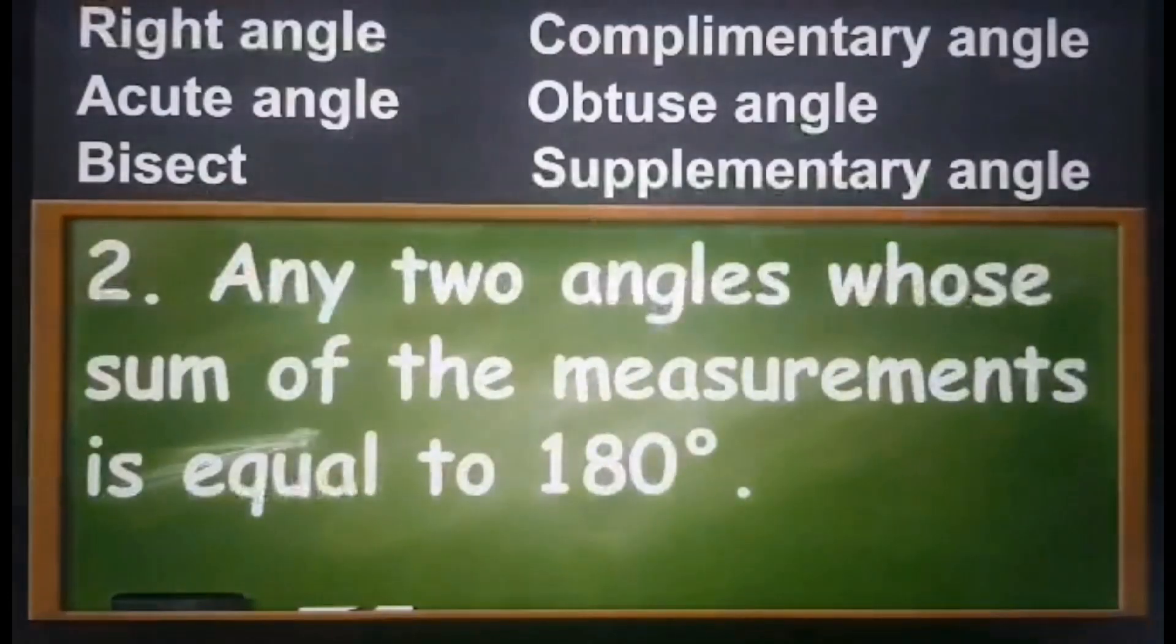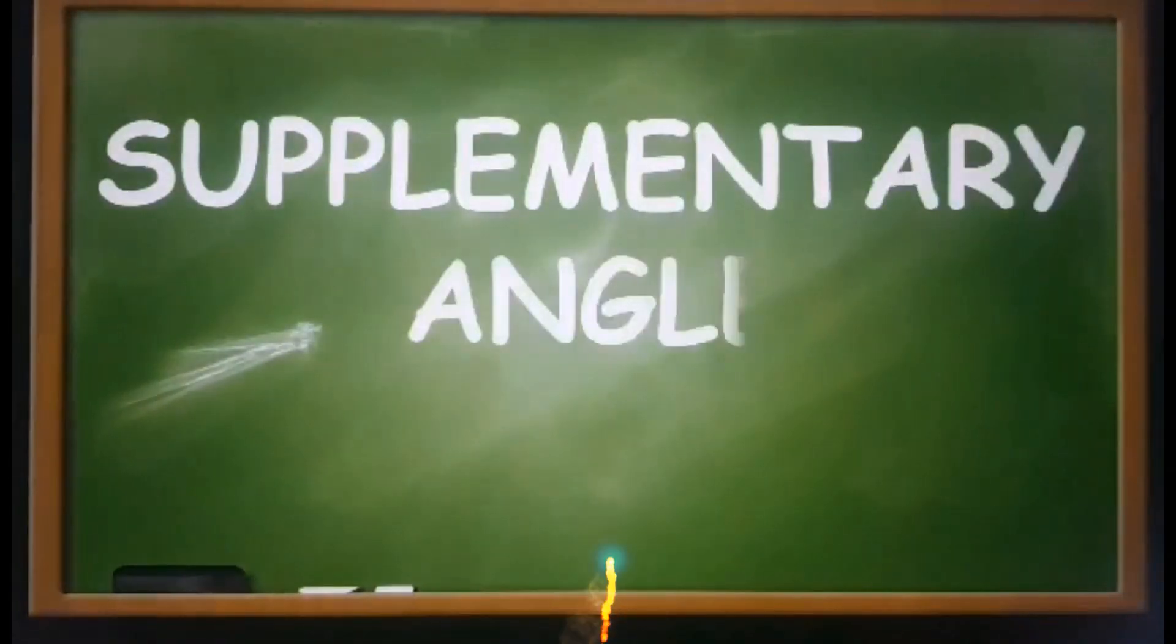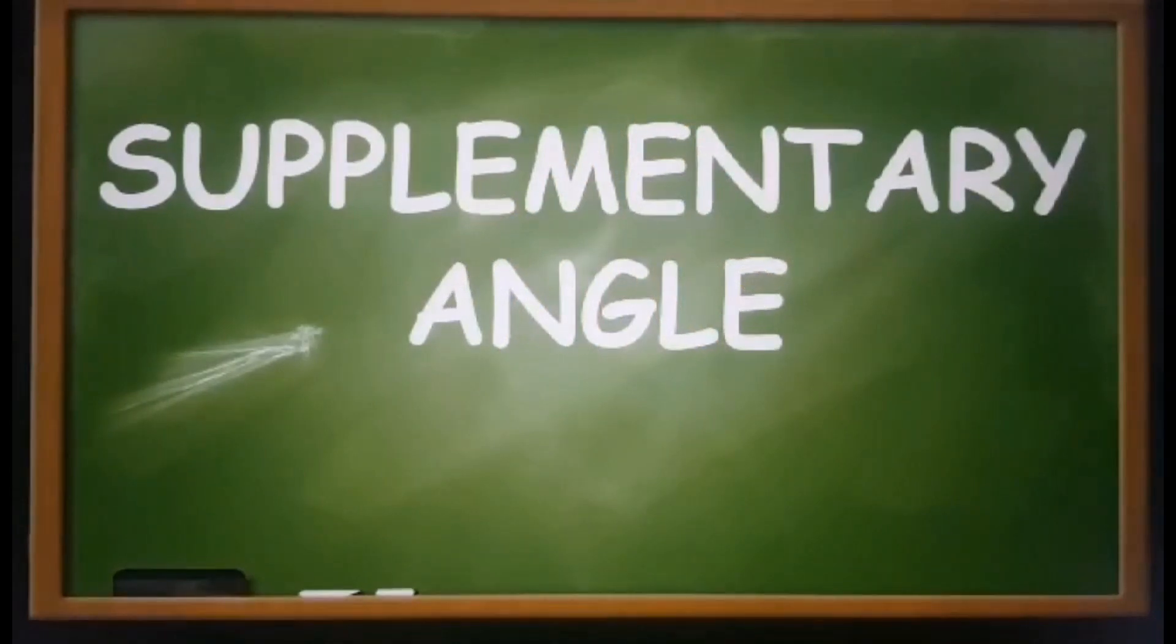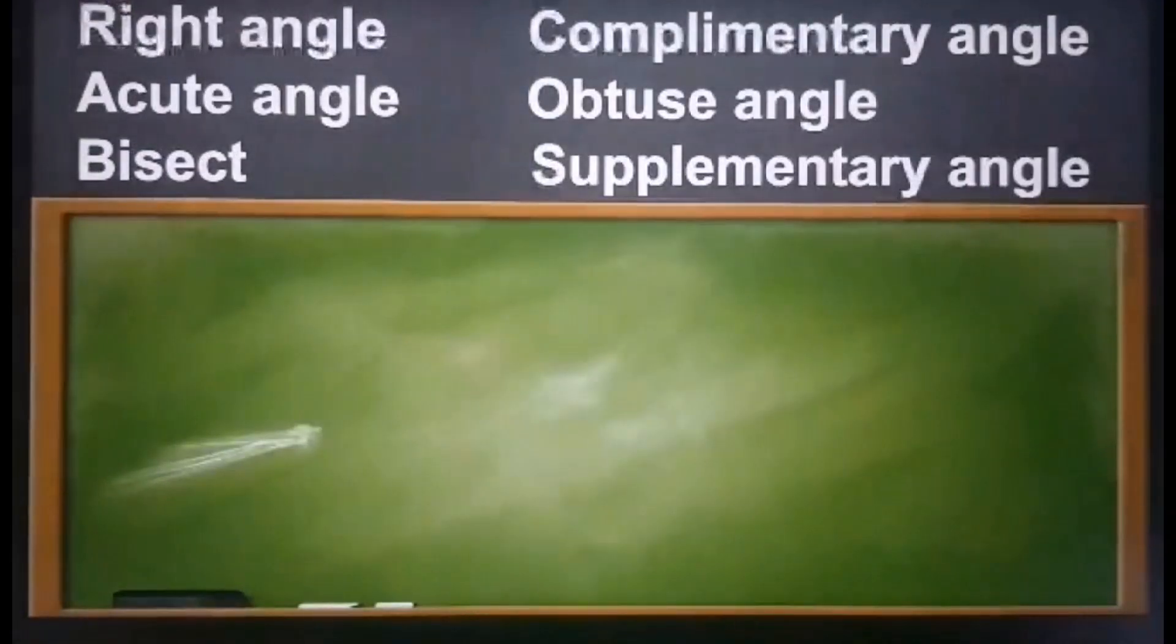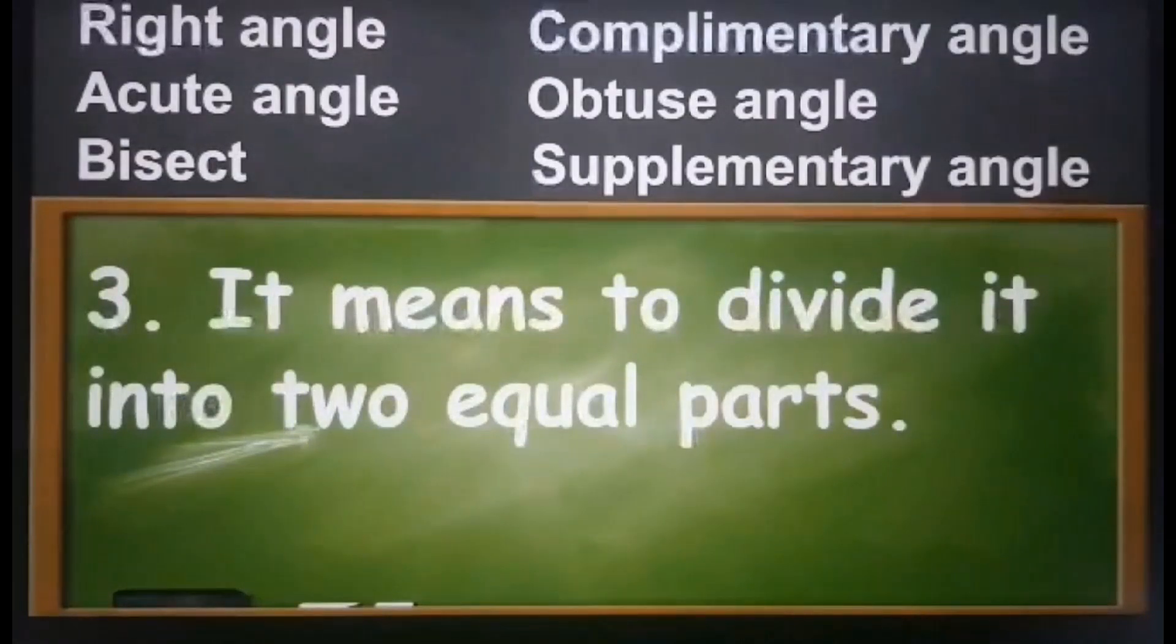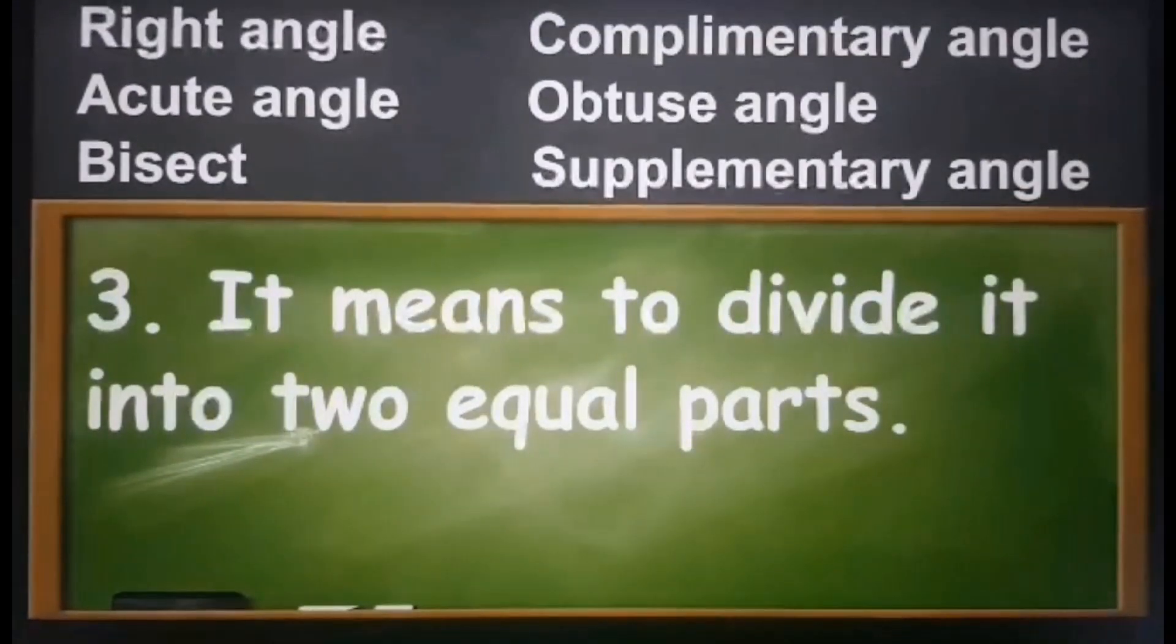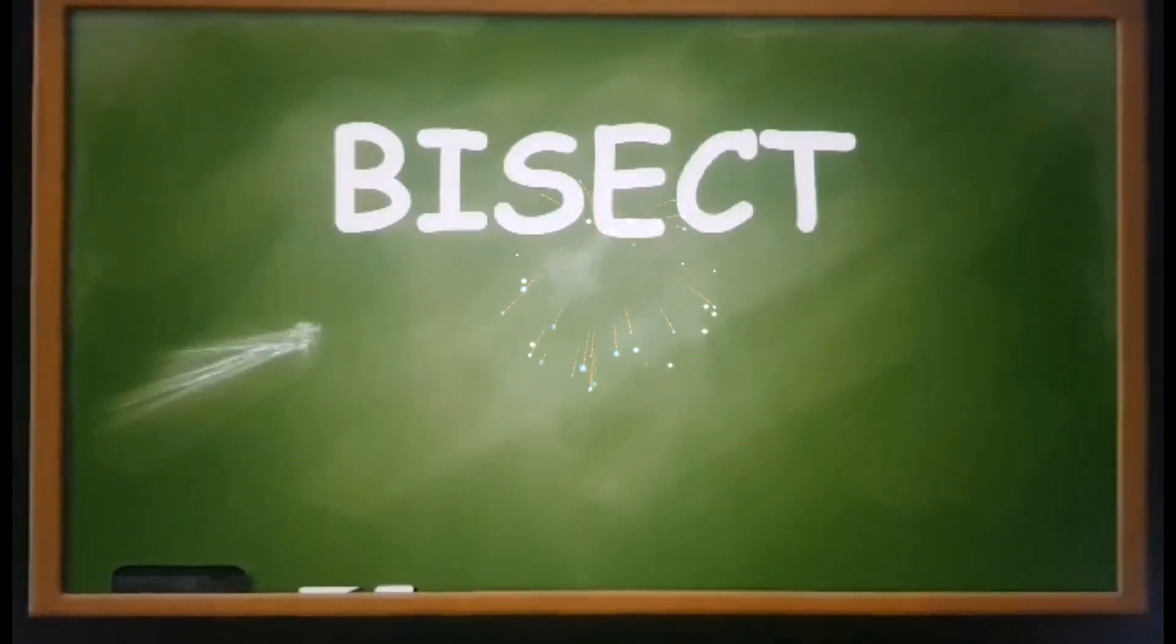Number two: any two angles whose sum of the measurements is equal to 180 degrees. The answer is supplementary angle. If you get it right, that's a very good job. If not, don't worry, three more to go. Let's keep going. Number three: it means to divide it into two equal parts. If your answer is bisect, you are absolutely correct.